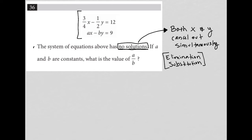Let's keep that in mind. The question goes on to say, if a and b are constants, what is the value of a over b? So here's our actual question. I'm going to rewrite the system of equations: three-fourths x minus one-half y equals 12, and below that, ax minus by equals 9.